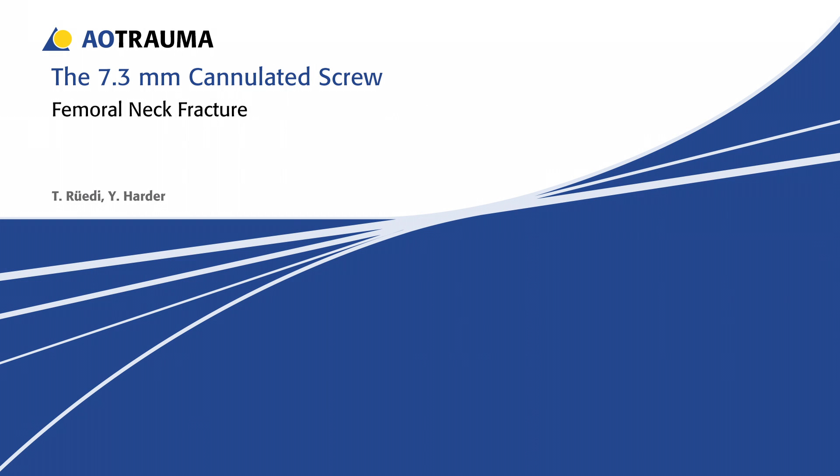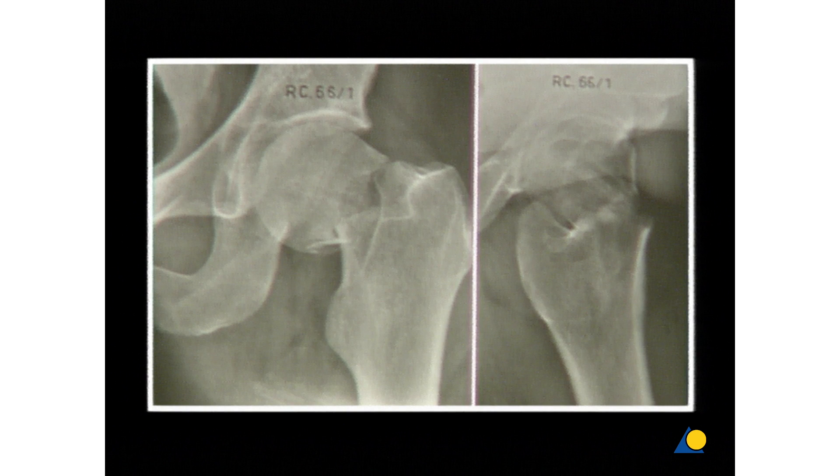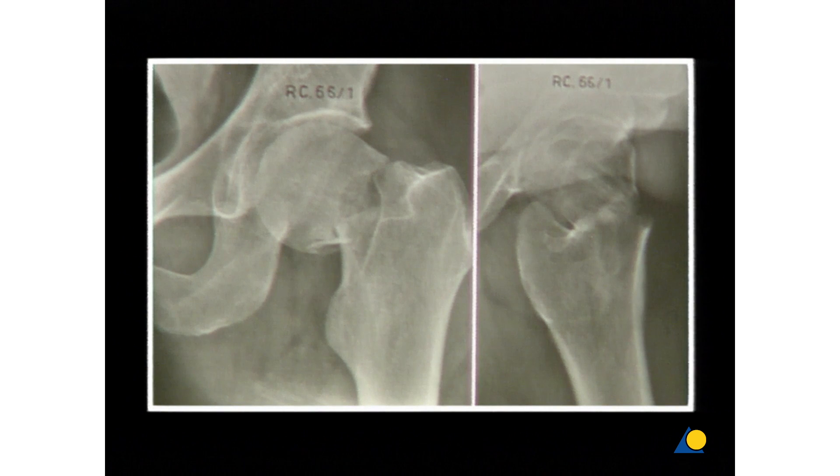The 7.3 millimeter cannulated screw for femoral neck fracture. This new implant is mainly indicated to stabilize femoral neck fractures, but may also be used in pelvic ring and tibia plateau fractures.